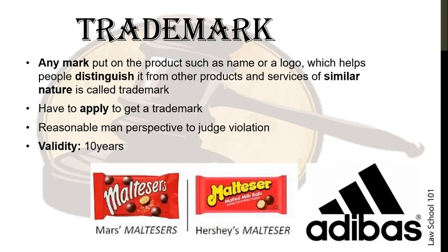For example, there are two companies: Blackberry the phone maker, and Blackberries the men's clothing brand. There is no violation here. But if either did business in the other's area — like Blackberries making phones or Blackberry making suits — it would be a violation, as the names are too close for the public to distinguish. The reasonable perspective is applied here. The two images shown denote trademark violations, like Adidas with a 'B,' which all of us have seen in some form.